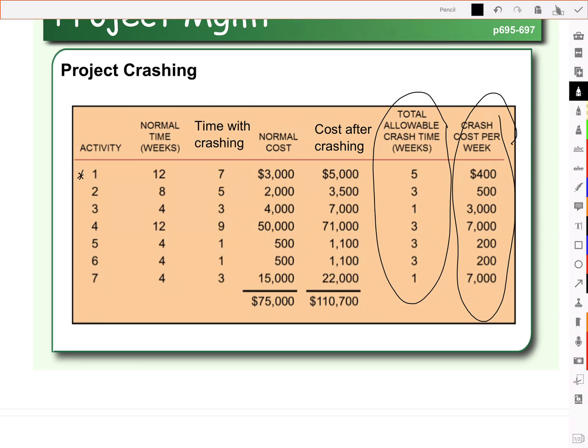And if you'll recall, in this example for building houses, the critical path was 1, 2, 4, and 7. So we only should focus on the critical path.